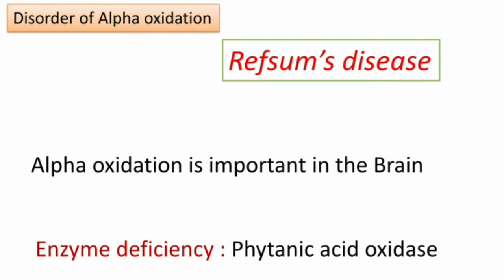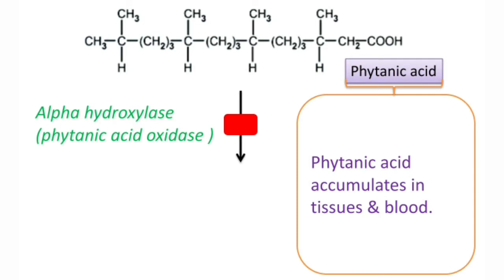Phytanic acid is derived from diets like milk and meat, and is also present in chlorophyll. Its oxidation requires the enzyme phytanic acid oxidase. This enzyme is deficient in Refsum's disease cases, and whenever phytanic acid oxidase is deficient, it leads to accumulation of phytanic acid in tissues and blood.